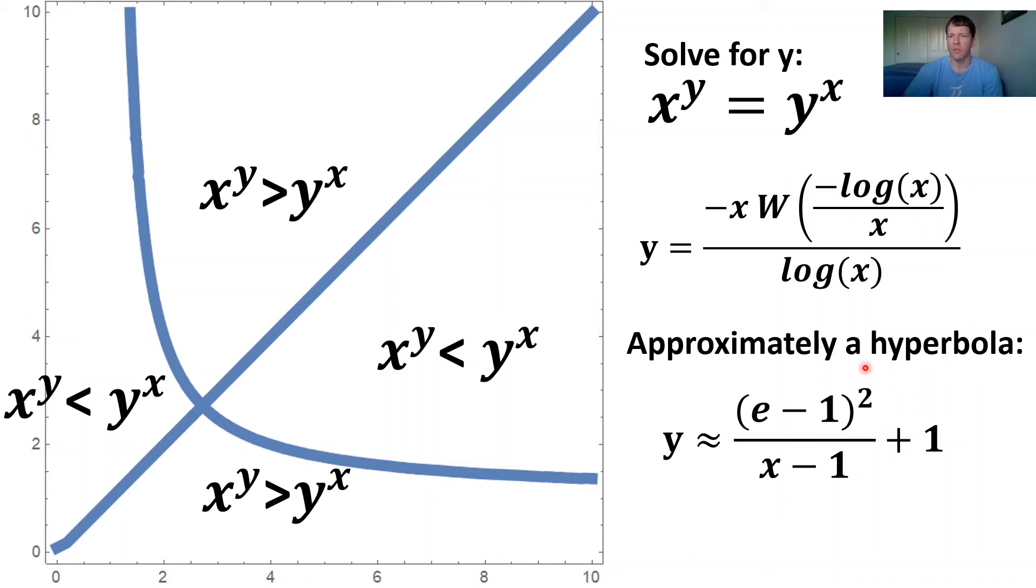But then when I plotted this, I was able to approximate it by a hyperbola. Which is just basically, I start with a hyperbola and then I shift it over to the right one and up one. Because you've got asymptotes here at one and one. And then I just scaled it so it went through the point e^e. And I got this.